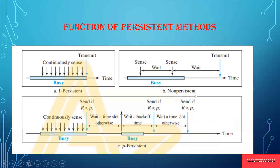In the non-persistent method, the channel senses whether the channel is idle. After sensing, it waits for a random back-off period of time. If it is not idle, it keeps sensing and waits again. If it finds the channel is idle, it starts transmitting the frame. Since different stations have different wait times, the transmitting frames are less likely to collide with each other. So non-persistent is better compared to one-persistent.